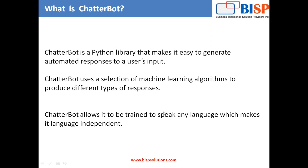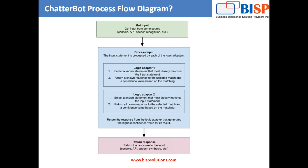Now let's have a look at the process flow of ChatterBot. First of all, we get input from some sources — like a console, some APIs, or speech recognition. One of the biggest examples nowadays for a chatbot is Siri, which comes with iPhone. You speak something and you get a response accordingly, so Siri is one of the live examples of chatbots using speech recognition.